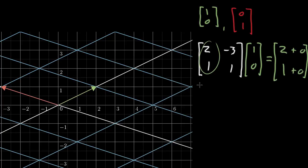And similarly, if we take that same matrix, 2, 1, negative 3, 1, and we multiply it by 0, 1 over here, by the second basis vector,